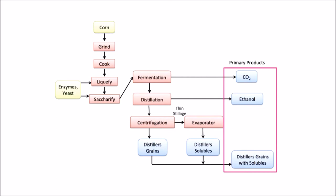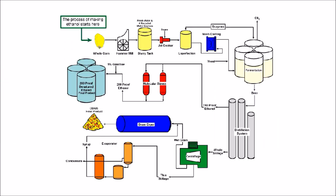After aging, the subsequent brew is exchanged to refining sections. Then, ethanol is isolated from the rest of the stitch. The ethanol is concentrated to 190 proof using customary refining. The remaining afterward is dried out to roughly 200 proof in a subatomic strainer framework.